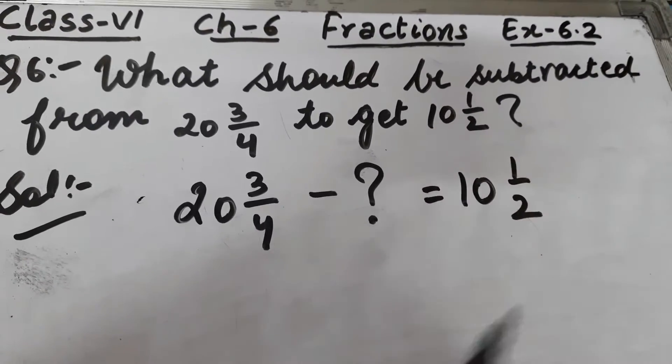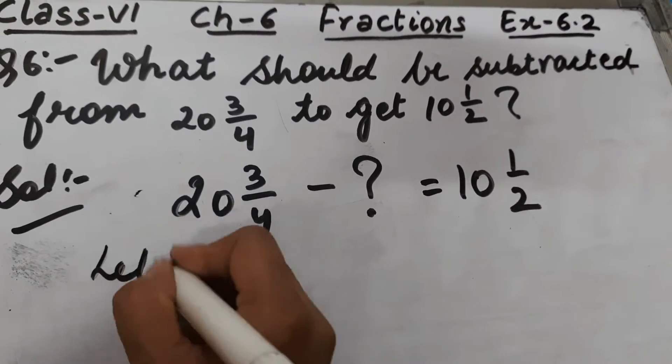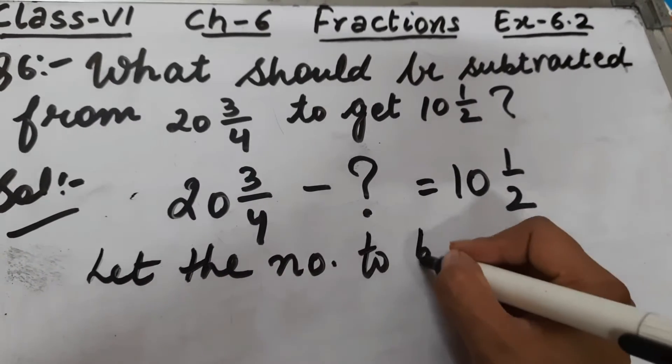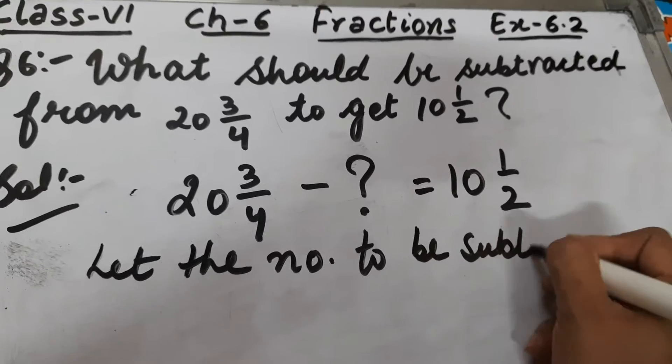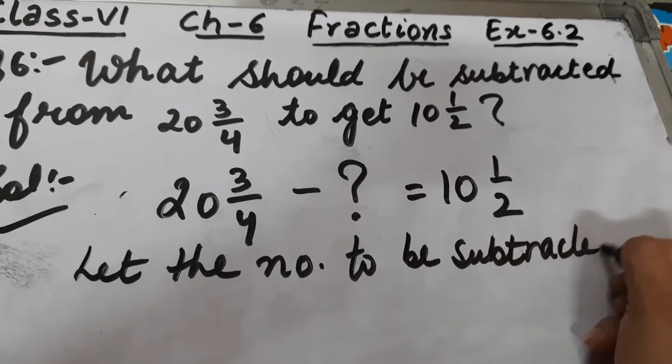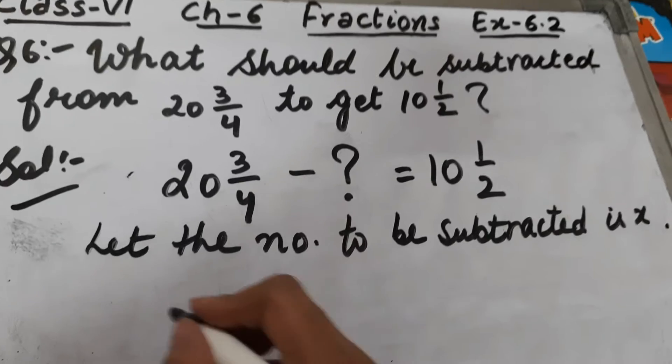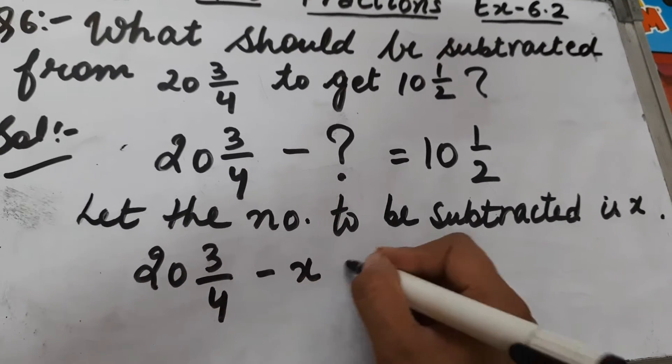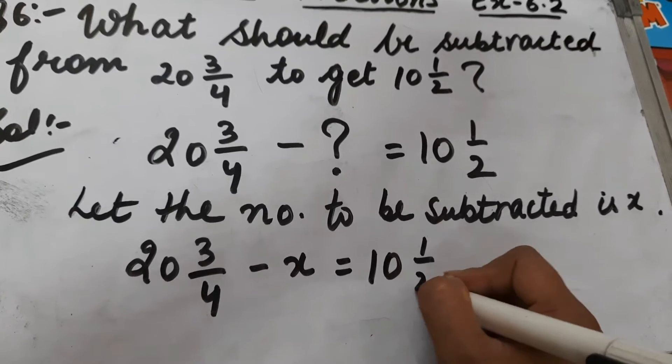Let the number to be subtracted is x. So your question is 23 by 4 minus x is equal to 10 1/2. Now we have to find the value of this x.